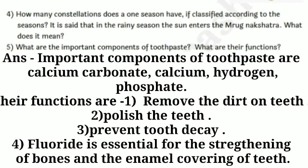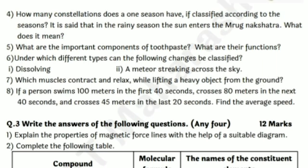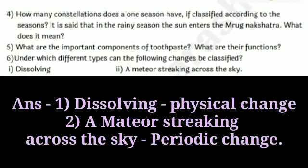Question number 6: under which different types can the following changes be classified? There are two changes. First, dissolving — this is an example of a physical change. Second, a material streaking across the sky — this is an example of a periodic change. Students should write their answers neatly and properly while solving this question paper.